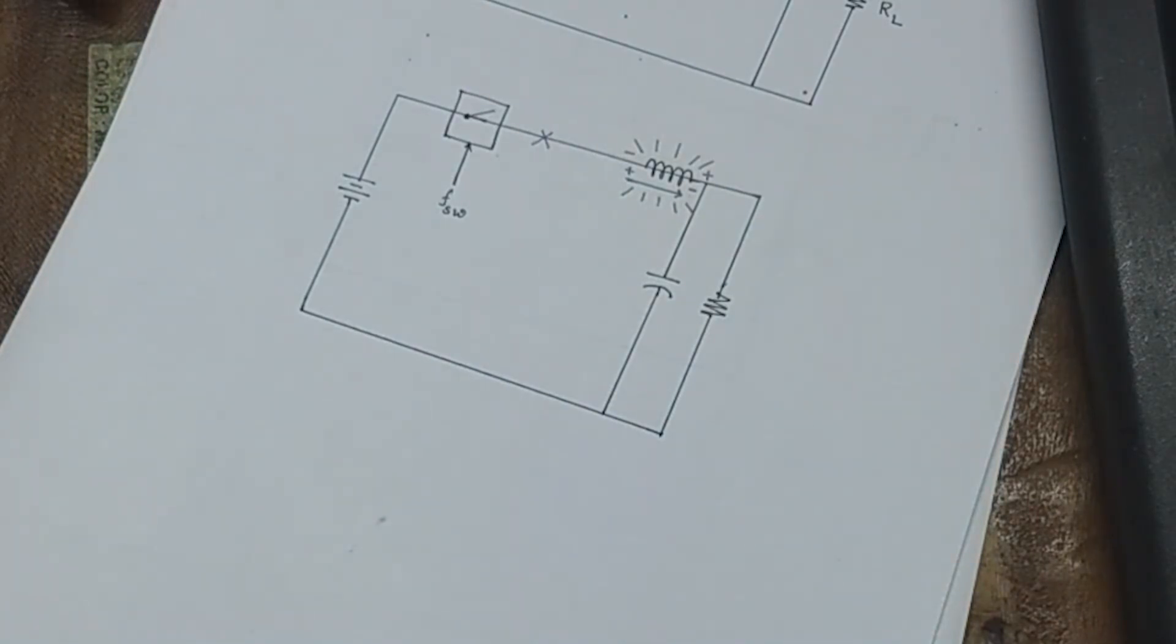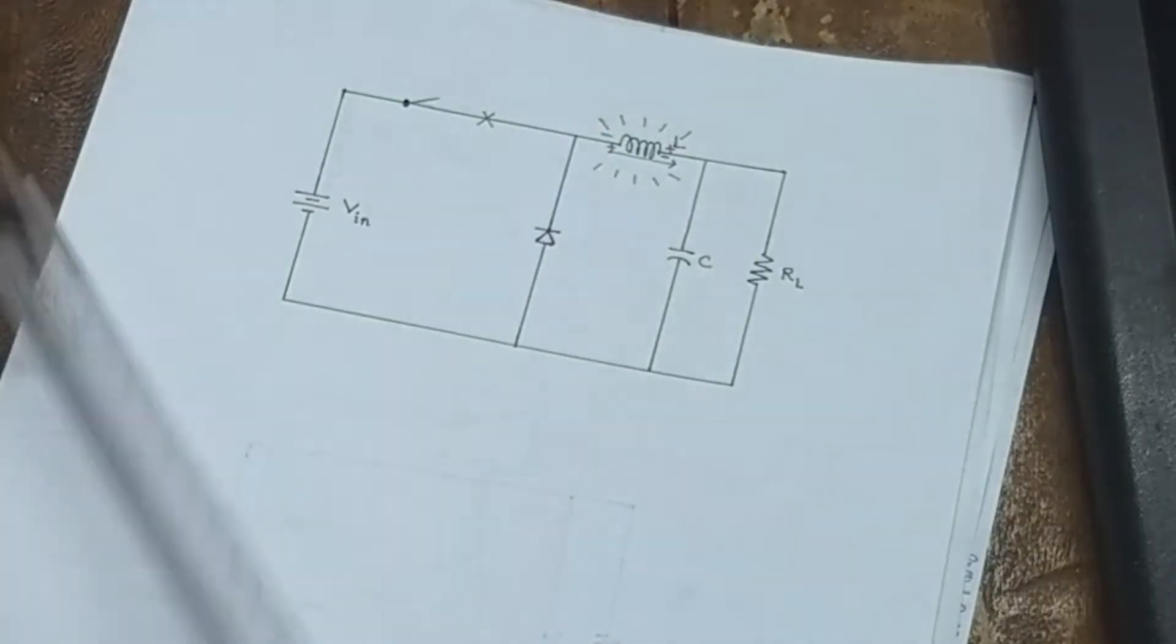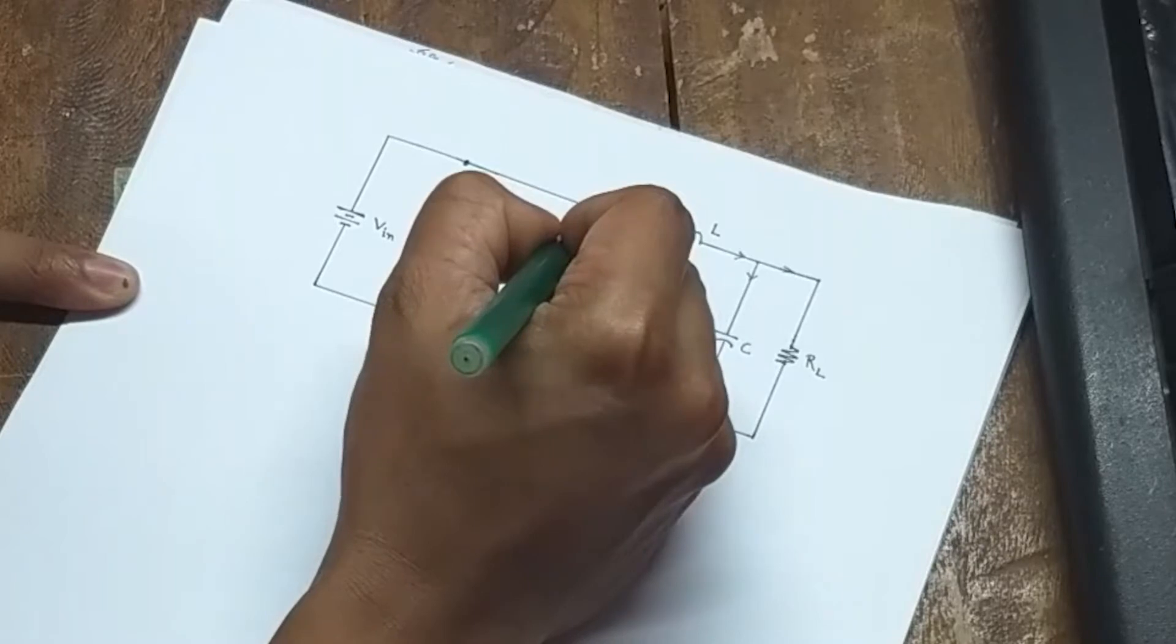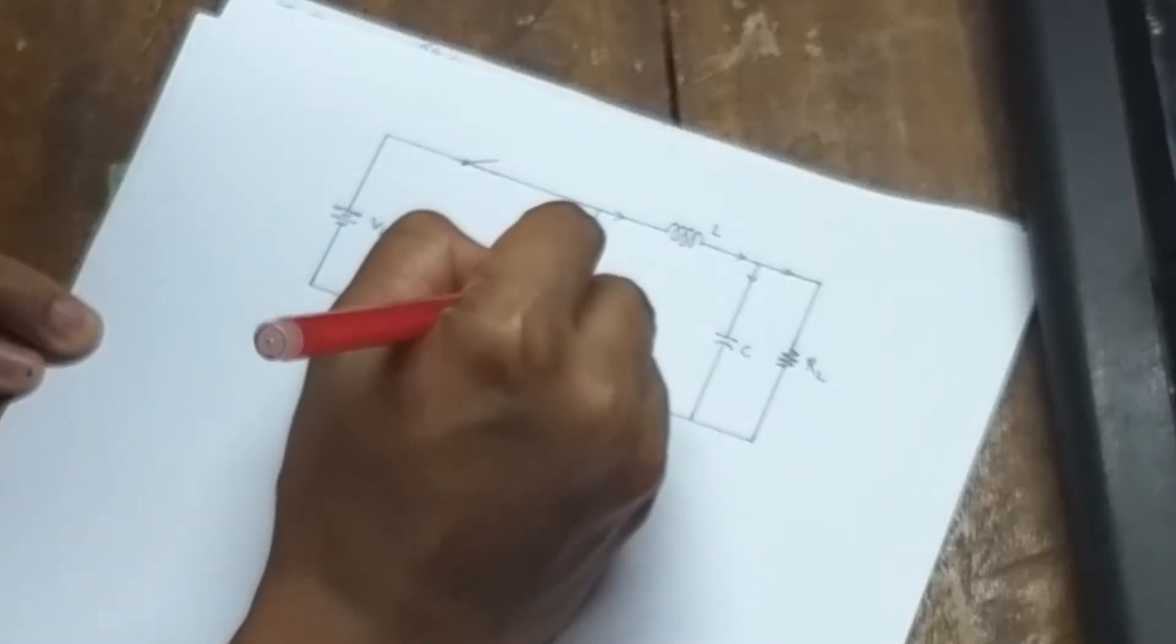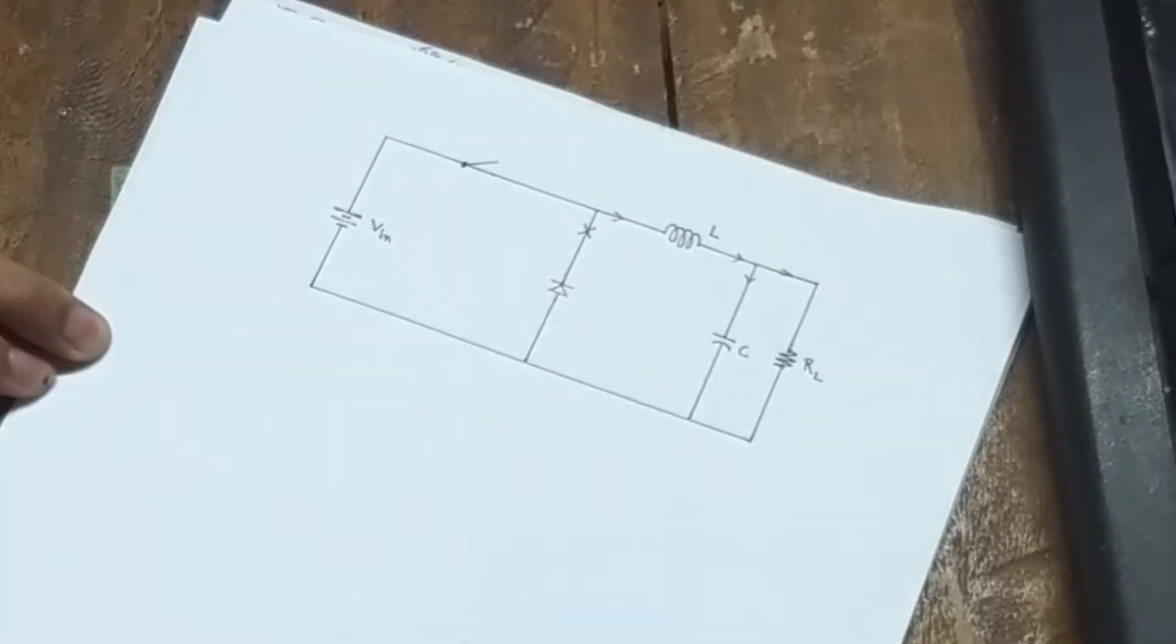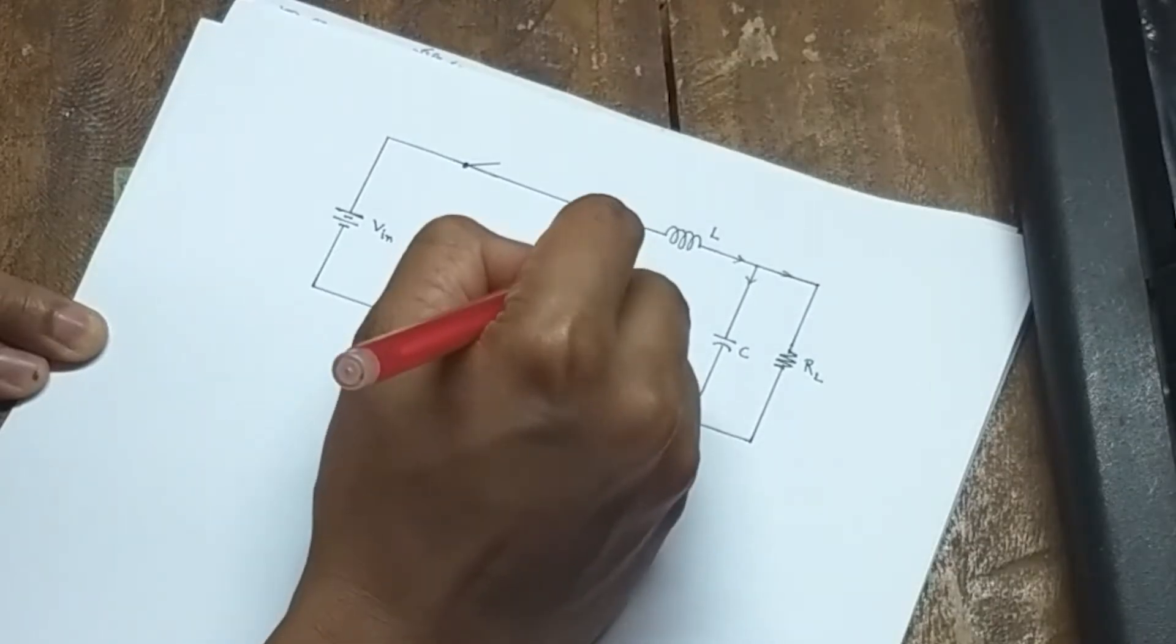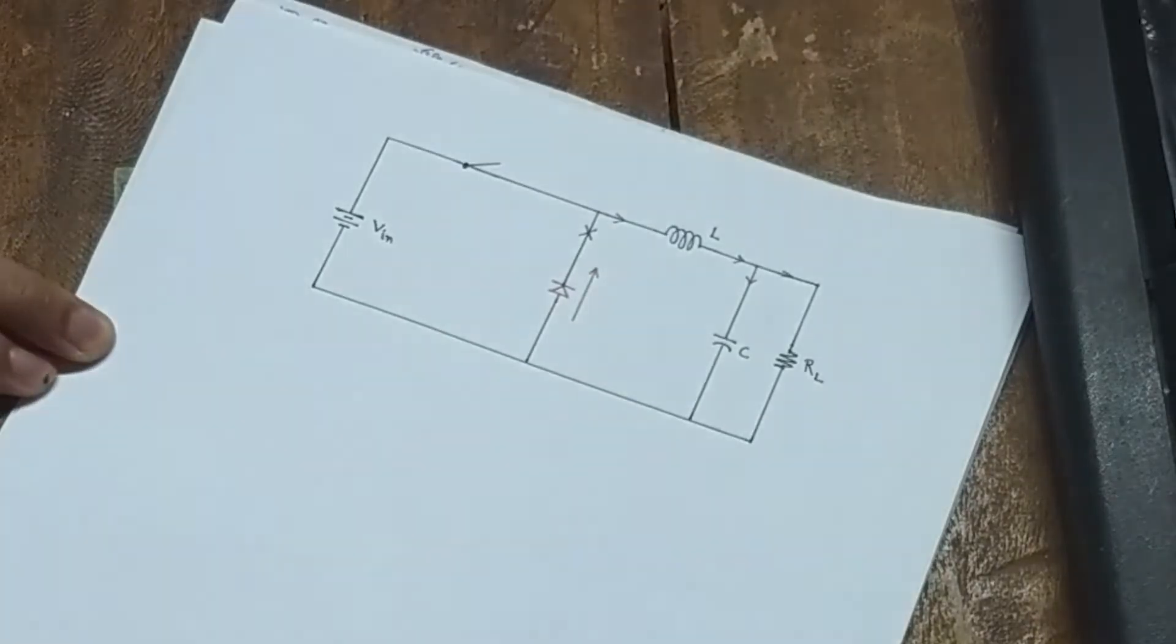Which can easily damage the switch or other components in the circuit. This is solved by connecting a diode which will remain at cutoff during the time the switch is on, and it will conduct when the switch goes off, thus allowing a path to flow the freewheeling current.